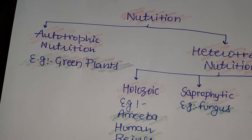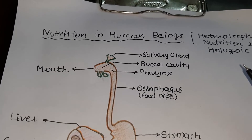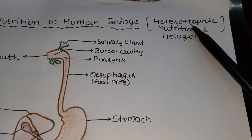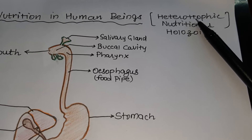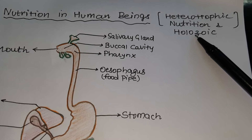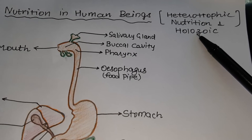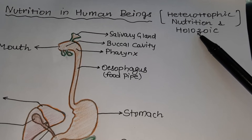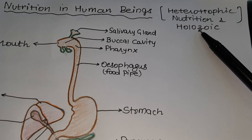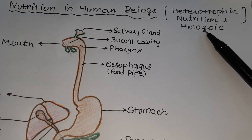As we know, human beings show heterotrophic nutrition — they cannot prepare their own food and depend on other organisms for food and nutrition. They show holozoic nutrition. Holozoic nutrition refers to those organisms which feed on solid food and engulf it through the mouth. Under holozoic nutrition there are five basic steps: first ingestion, second digestion, third absorption, fourth assimilation, and fifth ejection.